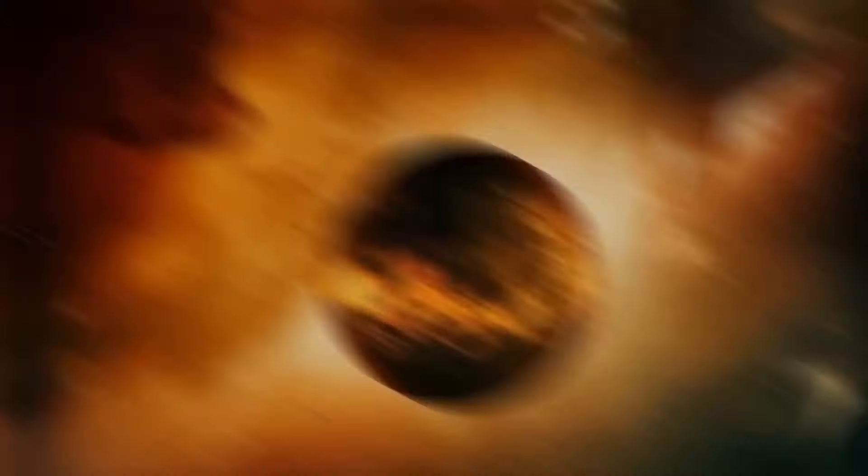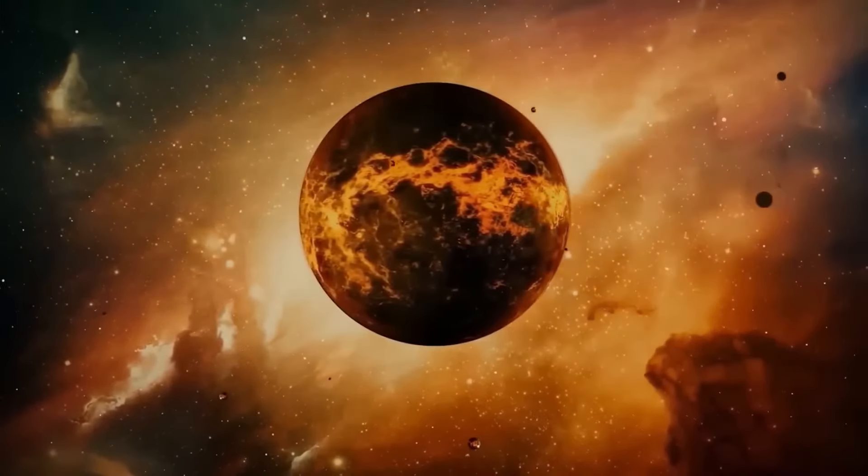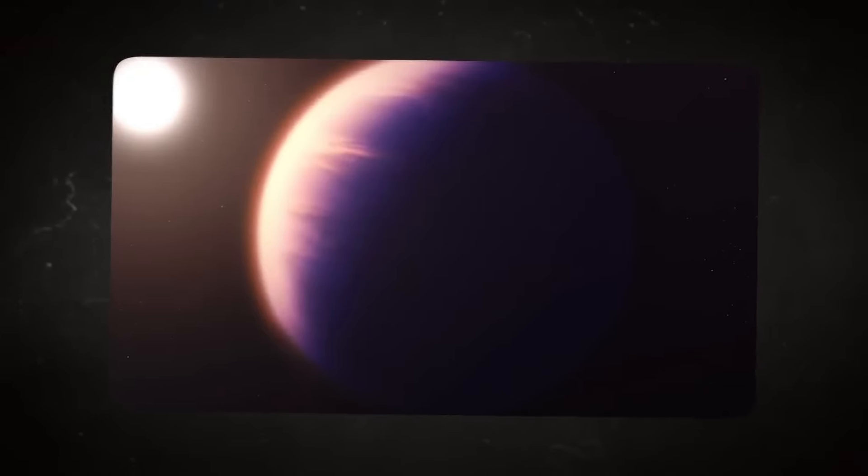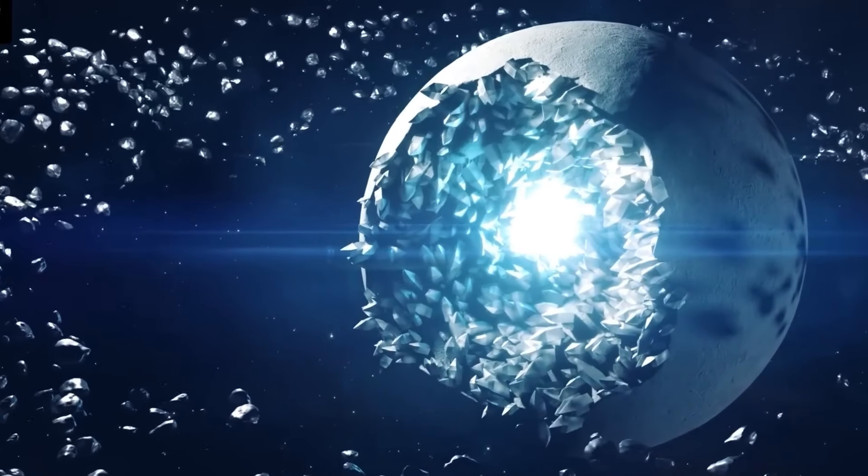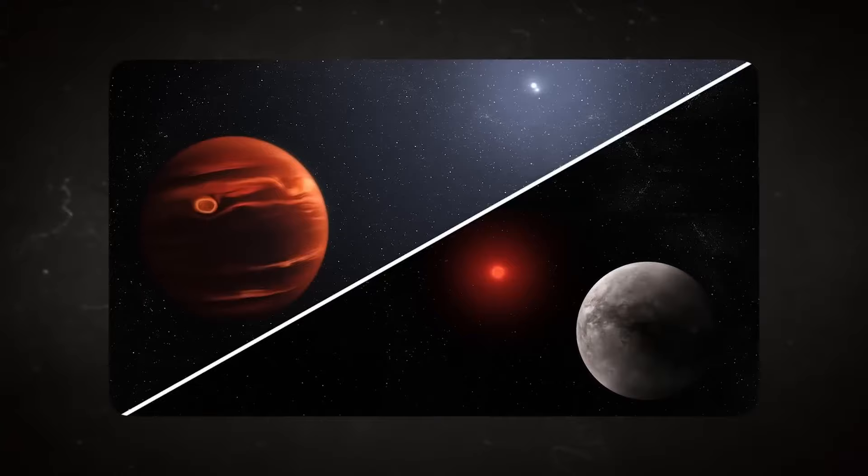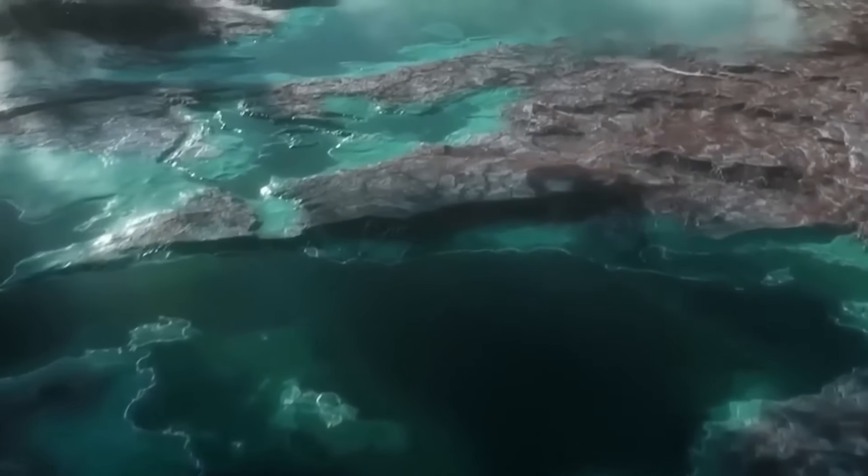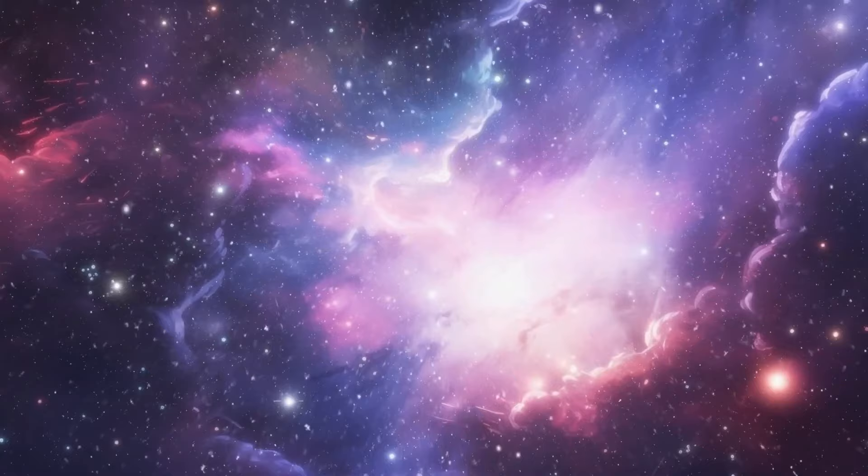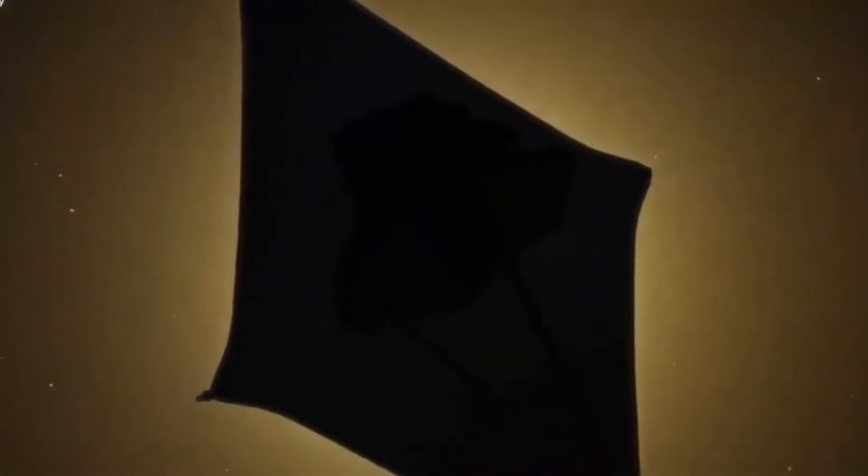Even though K2-18b has carbon-bearing molecules and is in the habitable zone, it doesn't mean the planet can support life. The planet has a radius 2.6 times that of Earth and is thought to have a massive core of high-pressure ice, like Neptune, but with a thinner atmosphere rich with hydrogen and an ocean surface. For Hycean worlds, vast bodies of water are anticipated, but it's also feasible that the water is too hot to sustain life or even be a liquid.